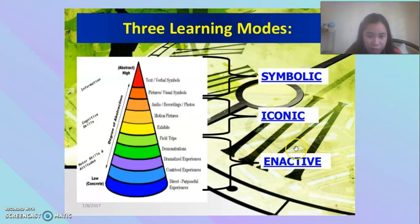This is the answer for that one. So for the enactive level of the three-tiered model of learning by Jerome Bruner, if we compare it to the cone of experience, if you can see this arrow, field trip, starting from field trip, demonstration, dramatized experience, contrived experience, direct purposeful experiences—they all belong to the enactive level.